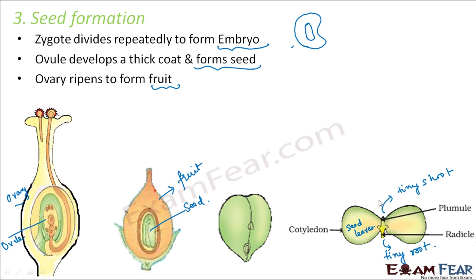After fertilization, the ovary of the flower becomes the fruit and the ovule becomes the seed. As for the other parts of the flower — the petals, the sepals — after fertilization they all fall off. Only the ovary and the ovule remain. The ovary forms the fruit and the ovule forms the seed. This is why in any garden you first see flowers, and then those flowers later form fruit.